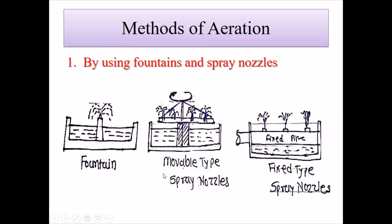One method of aeration uses fountain and spray nozzles. This is an image of a fountain, and this is the image of a movable type spray nozzle. Water is spread into the atmosphere, and atmospheric oxygen is added to the raw water. This helps remove foul gases and improves temperature, color, and odor, and kills certain bacteria to a certain limit. The movable type spray nozzle has an upper part that is movable by circular section. The fixed type spray nozzle allows water to enter through a fixed pipe.